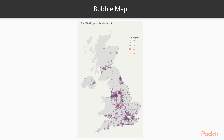Instead of showing magnitude by color, as seen in a choropleth map, a bubble map uses different sizes of the bubbles to represent a numeric value — in this case, population. And of course, it is also color-coded, which is not necessary for a bubble map, but it shows different dimensions of information in this case.